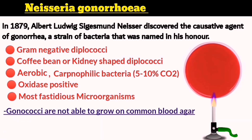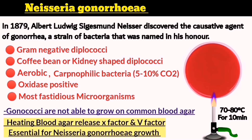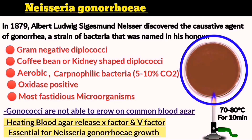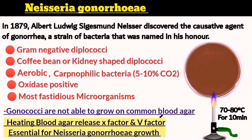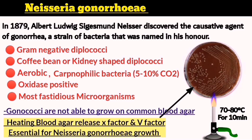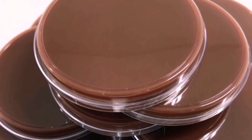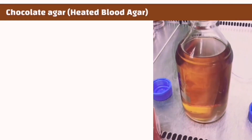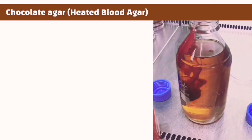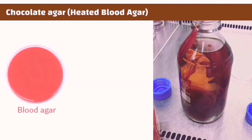However, when blood agar is heated to 80 degrees Celsius for 10 minutes, it breaks down the haemoglobin and releases X-factor and V-factor, which are essential for the growth of Neisseria gonorrhea. This media is referred to as chocolate agar. Chocolate agar is a Muller-Hinton agar or tryptone soya agar with 5% sheep blood added, which is then heated in a water bath as described.